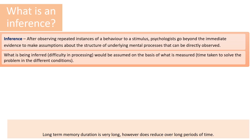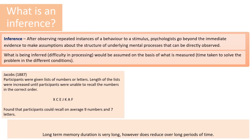We might infer that processing one piece of information is more difficult than processing a different piece — and we would have made that inference based on a measurement, such as the time taken to solve a problem under different conditions. Let's look at this in the context of two studies from the memory unit. The first is by a researcher called Jacobs. Jacobs gave participants a list of either numbers or letters, increasing the length until they couldn't recall them accurately in the correct order, and found that participants could recall on average nine numbers and seven letters.